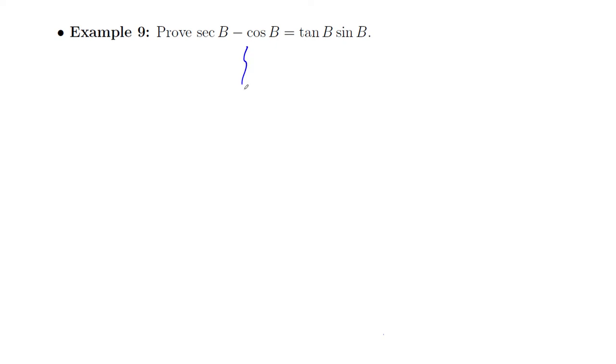So in fact, what I'm going to do here is I'm just going to put a dividing line. So this is the left-hand side is equal to sec(B) minus cos(B). And then my right-hand side is equal to tan(B) times sin(B).